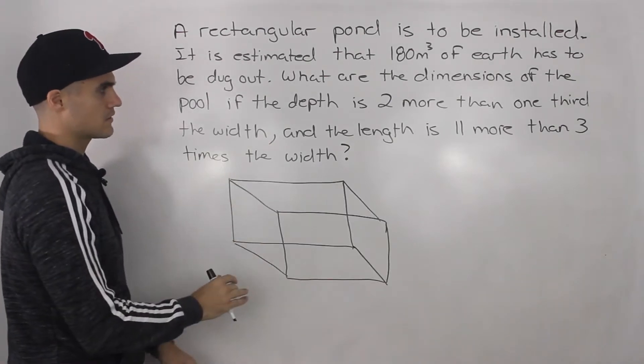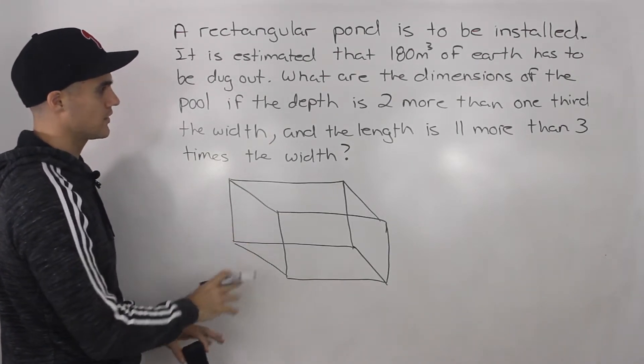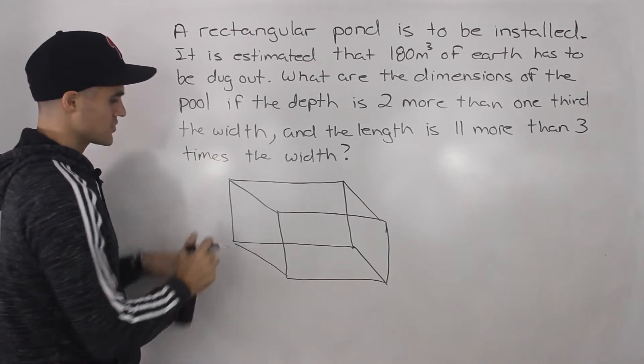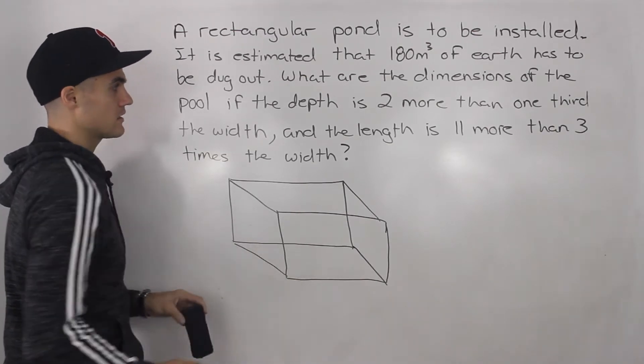So the drawing would look something like this. We have a rectangular pool here. And how can we find expressions for the height, the width, and the length?